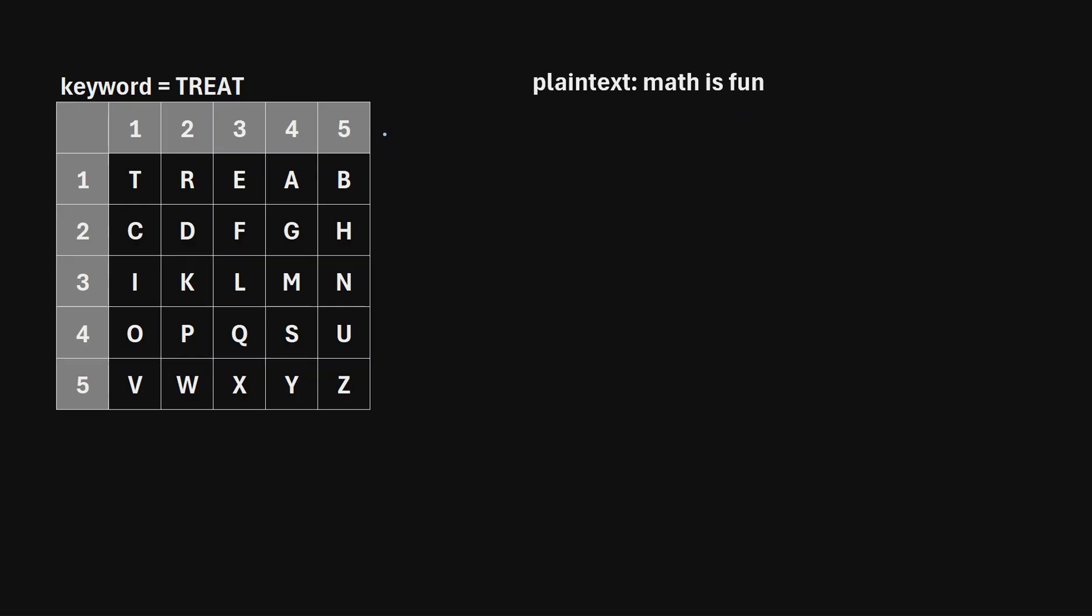We first need to build something known as a Polybius square. This is a 5x5 square in which each letter of the alphabet only occurs one time, excluding the letter J. Now, to actually construct this square, what we do is we pick a keyword. So for this example, I picked the keyword treat.